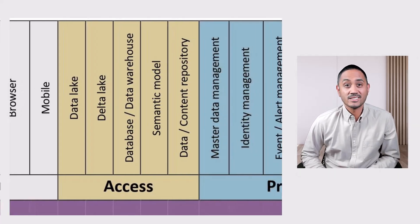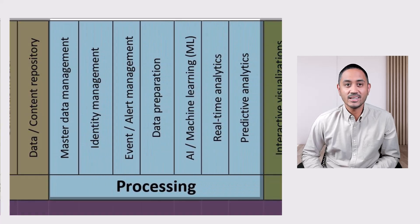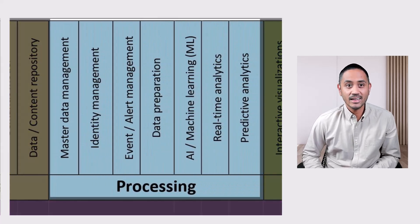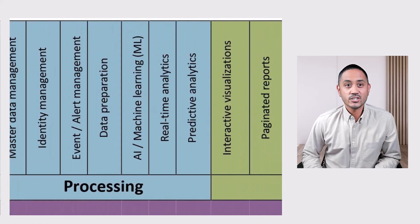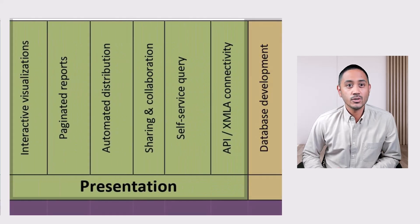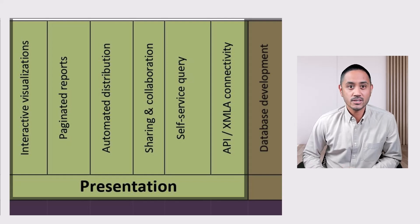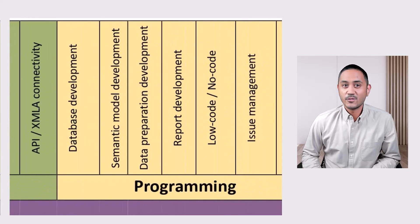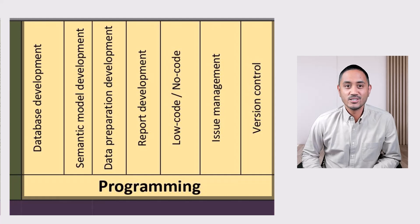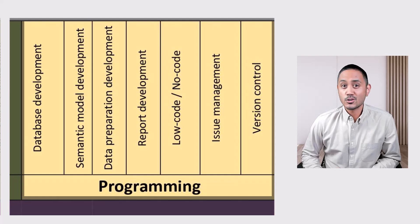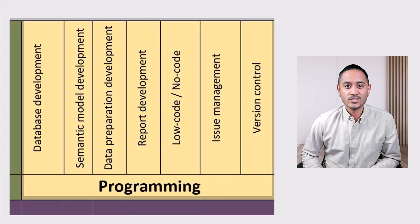Then we have Processing. This section highlights how data gets manipulated. Does it involve AI? Can it send alerts? The Presentation section will show you how each tool displays data. Are the reports interactive? Does it support collaboration? And lastly, if you're a developer, the Programming section is your zone — from database development to version control, it's all there.